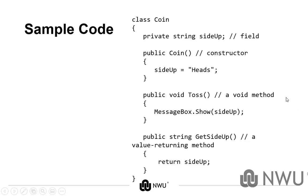Here is a quick example of a class — and you've worked with classes, you just didn't know it yet. The declaration at the top starts with the keyword 'class' and then the class name, which should always start with a capital letter. This is a class for a coin, and you can see we have a toss method, a get-side-up method which returns a string, and the only field or characteristic this coin has is which side is up — heads or tails.